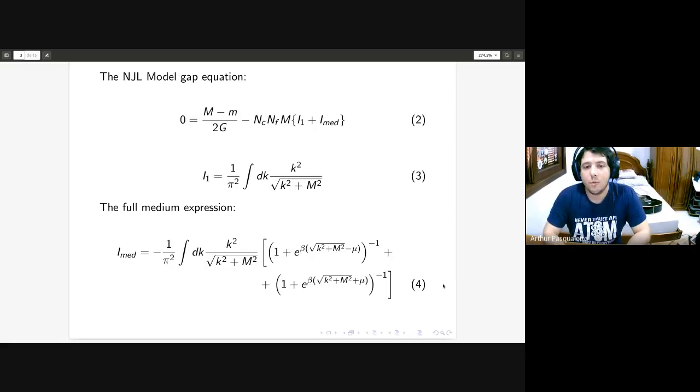If you pay attention to equation number three, this is an integral that we integrate from zero to plus infinity. If you sum the powers of k, you can see that in the bottom we have square root of k squared plus a positive mass, but you can ignore the mass. You see that we will have an integral of k from zero to infinity, and that's obviously divergent.